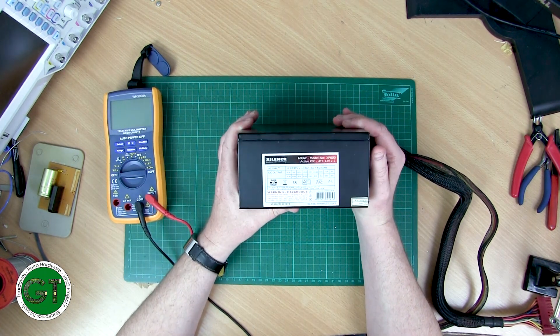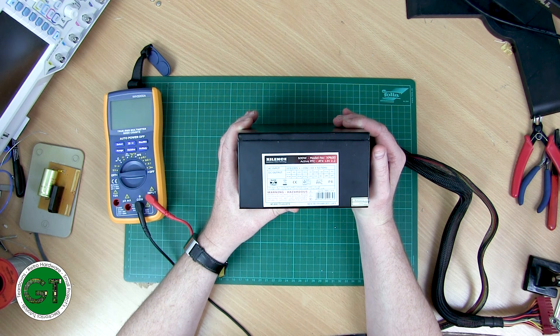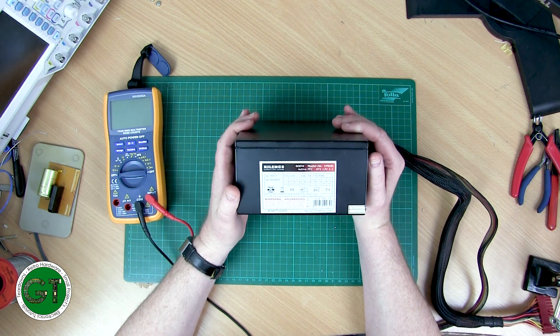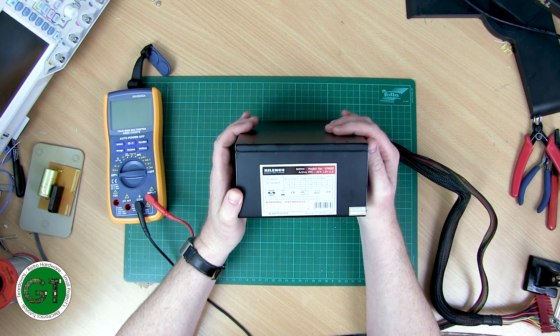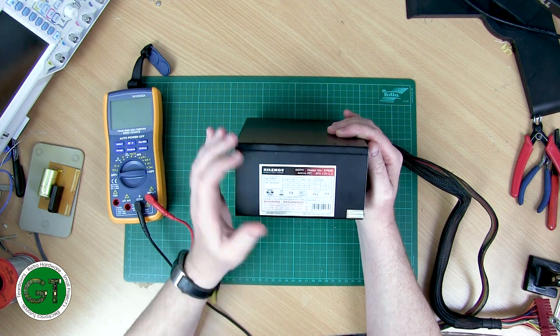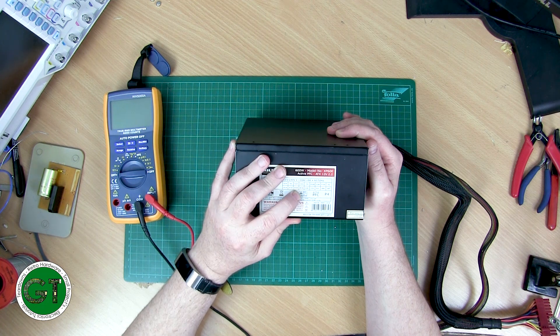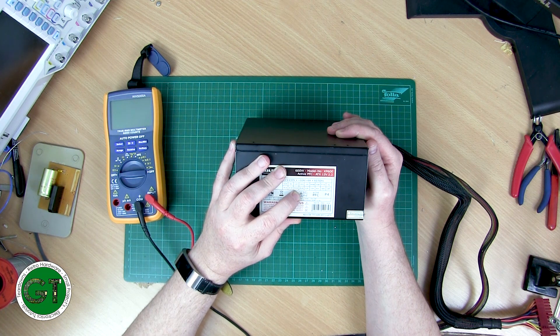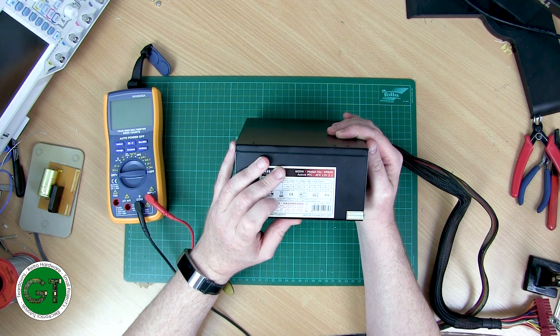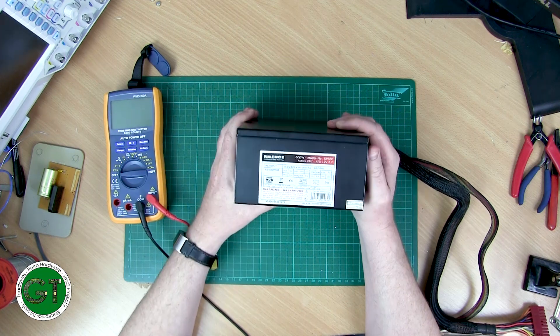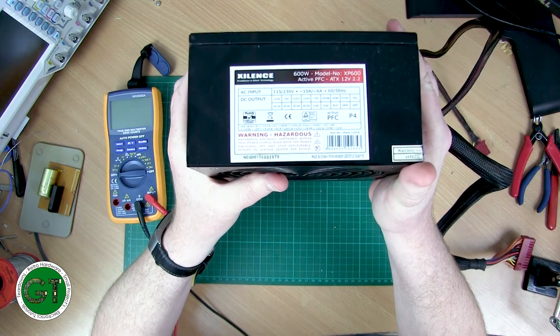We can see here that there's various 3.3, 5, 12.1, not sure why, 12.2, minus 12 and the secondary 5 volts on here. The first 5 volts rated at 20 amps and the 12 volts at 30, 20 amps and the 5, yeah, 30 amps. Another 20 amp output, another 3 amp. So it's pretty beefy.